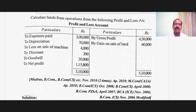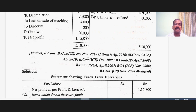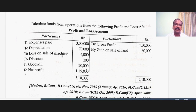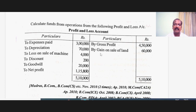Now let us look at the problem. Calculate funds from operations from the following profit and loss account. You are given with the profit and loss account of a business enterprise for a particular year, which is prepared at the end of the year. As usual, you find that indirect expenses and losses are debited in the P&L account, and indirect income is credited in the P&L account.